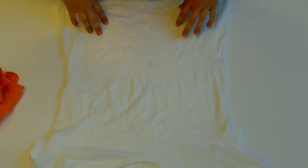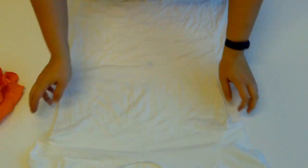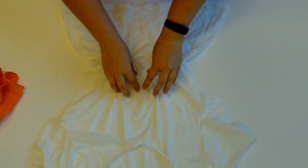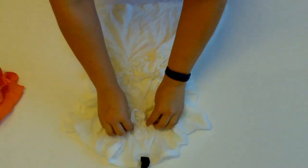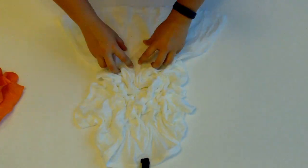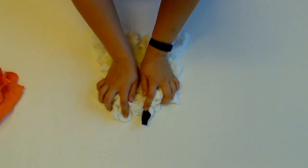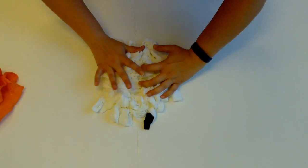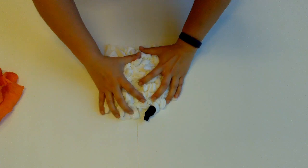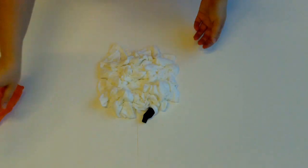For the crumple, lay the shirt out on a flat surface. Begin to scrunch up the shirt into a flat disc and secure with rubber bands.